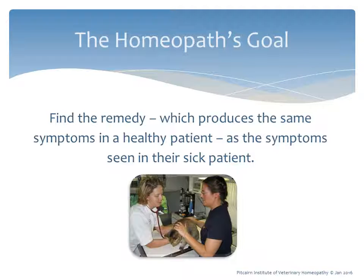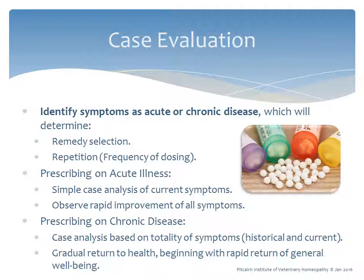The homeopath's goal is to find the matching remedy that produces the same symptoms in a healthy patient as seen in the sick patient. The first step is to evaluate the case and identify symptoms as acute or chronic, which determines both remedy selection and dosing frequency. For acute illness, a simple case analysis of current symptoms is performed, resulting in rapid improvement. For chronic disease, the case analysis is based on the totality of symptoms — historical and current — resulting in a gradual return to health.